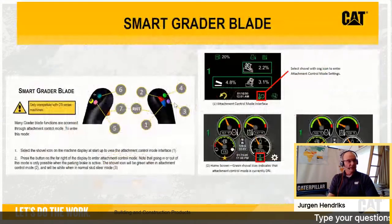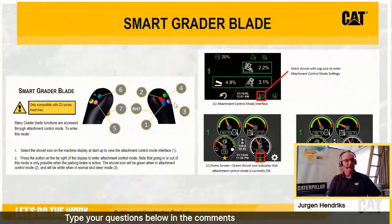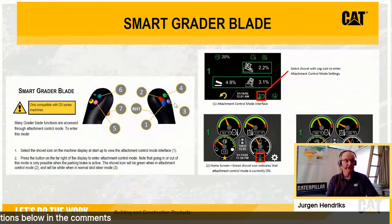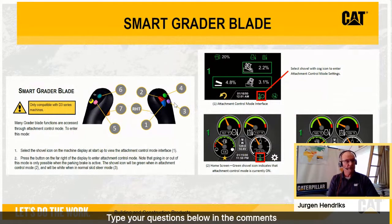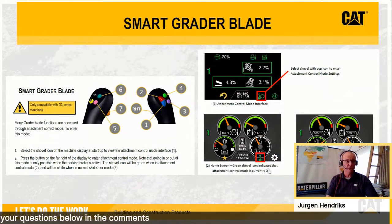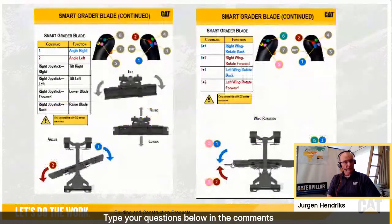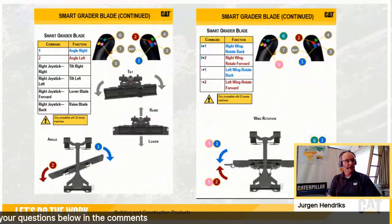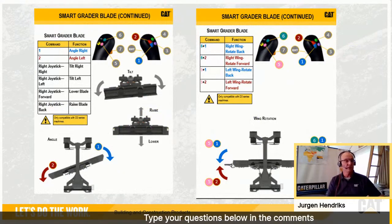With the smart grader blade, you connect it to the machine and the machine recognizes it as the smart grader. It unlocks the screen and you go to work tool mode. The green shovel indicates work tool mode is on; the white shovel means attachment mode is off, or machine mode is on. When attachment mode is on, the functionalities are fully integrated into the joysticks — no extra buttons needed — though the joystick functions are slightly different compared to machine mode.